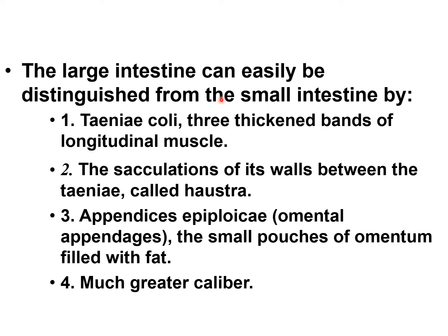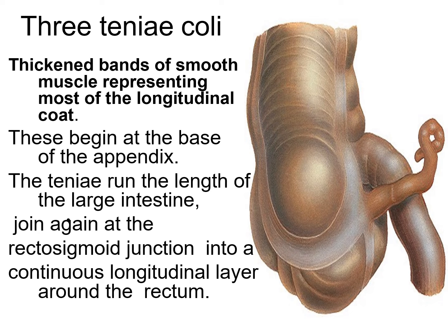There are four distinguishable differences between the small intestine and large intestine: taenia coli, haustra, omental appendices, and greater calibre. In this image you can see the three taenia coli — thickened bands of smooth muscle representing most of the longitudinal coat. They begin at the base of the appendix and run the entire length of the large intestine, joining at the rectosigmoid junction into a continuous longitudinal layer around the rectum.